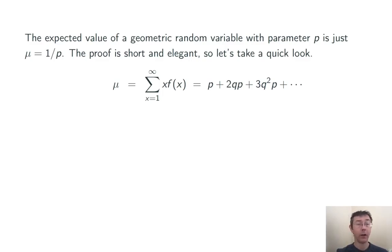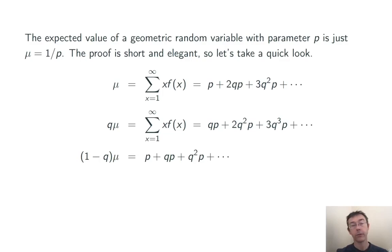Here's the formula for the expected value of a random variable. This is true generally. It's the sum of the possible outcomes times their probabilities. In this case, we get p plus 2qp plus 3q squared p, and so on. This is similar enough to a geometric series where we can use the same sort of technique we used to find the sum of a geometric series. Multiply the whole thing by q, which is kind of like a common ratio here, not exactly, but close enough. And then subtract the results. We're left with 1 minus q times mu equals p plus qp plus q squared p, and so on. And this right-hand side is a geometric series, and it's going to be a convergent one since the common ratio is less than 1.